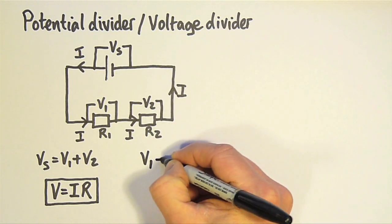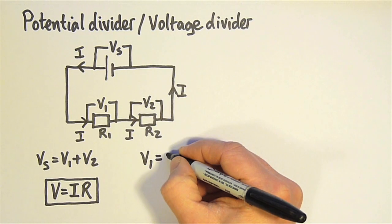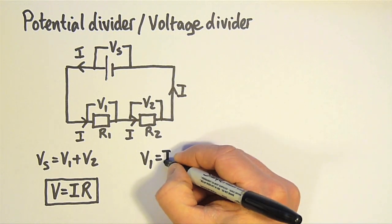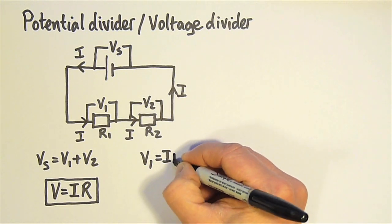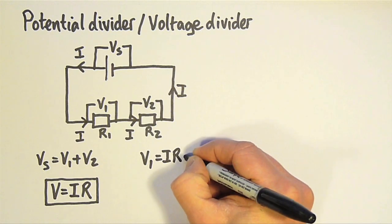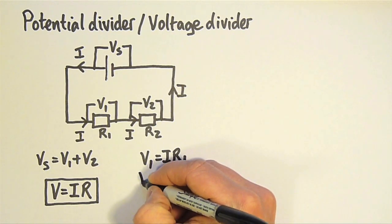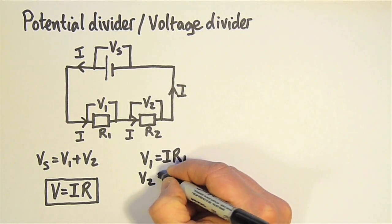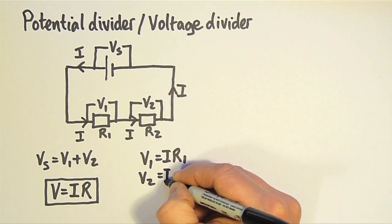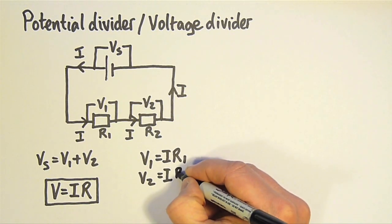Let's use this to examine the voltages in these components. V1 is equal to the current through R1, which is I, multiplied by its resistance. And V2 equals the same current, I, multiplied by R2.